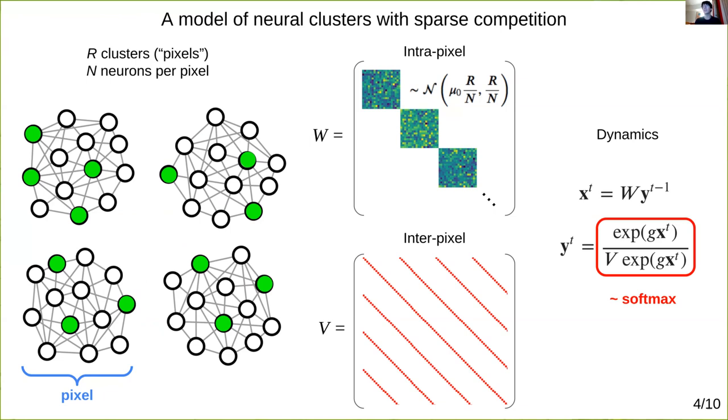So each sister neuron gets random input from its pixel while simultaneously playing a winner-take-all game with a set of sister neurons and other pixels.